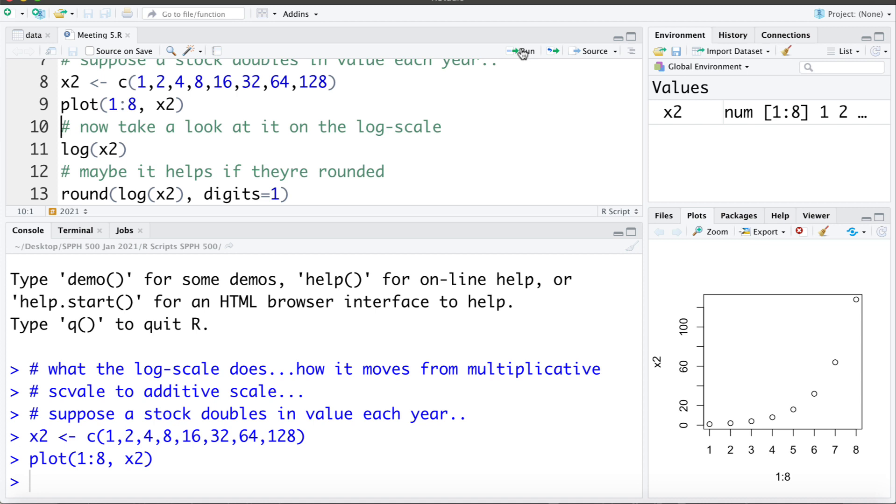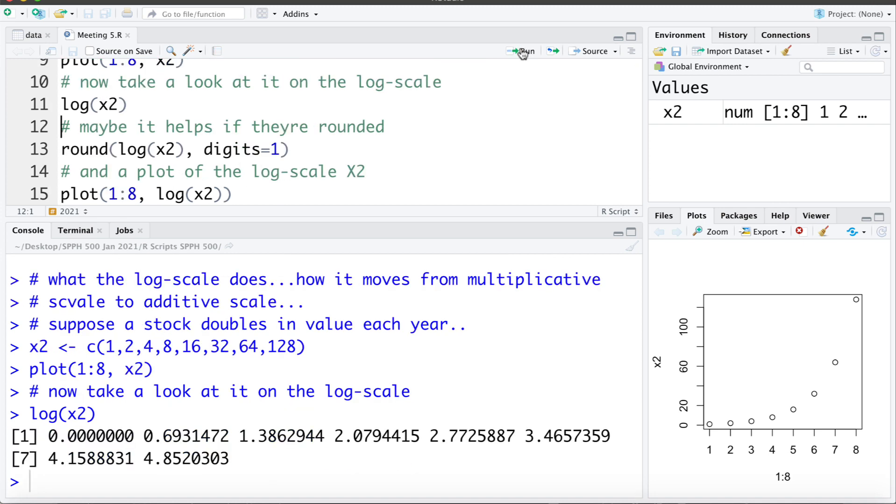Now let's take a look at the variable x2 if we put it on a log scale. So I'm taking the log of x2 here. Now we can see each value it jumps up by the same amount. It goes from 0 up to 0.69, from 0.69 up to 1.38. So each time it's increasing by the same amount.